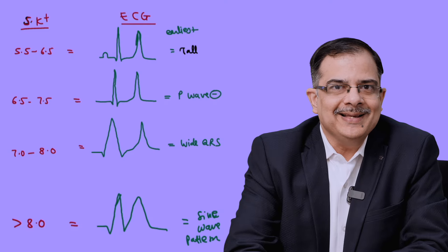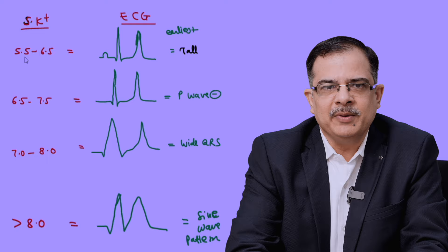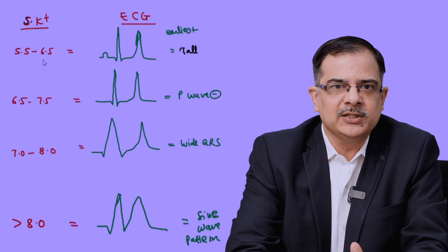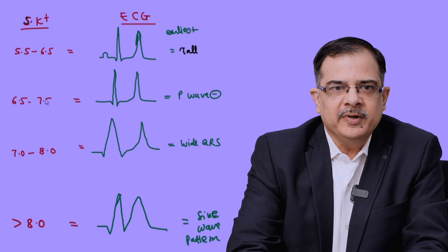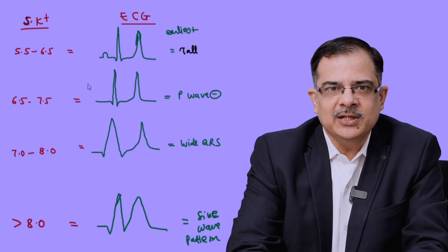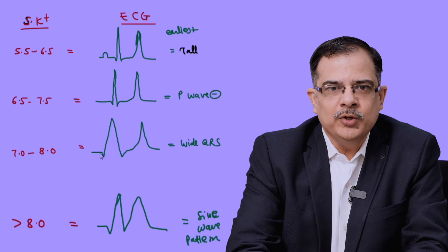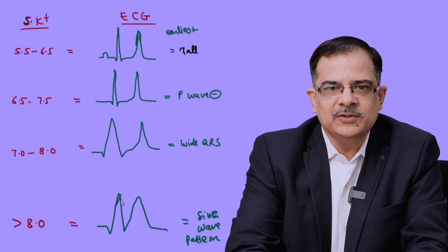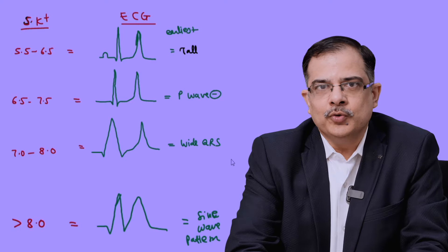Now coming to the treatment of hyperkalemia. The most important complication is cardiac. The ECG changes depend on the potassium value. When potassium is mildly elevated between 5.5 to 6.5, the earliest change is tall T waves. At 6.5 to 7.5, the P wave becomes very small or absent. At 7 to 8, there will be wide QRS complexes. Above 8, the ST segment becomes narrow and the QRS merges with the T wave, producing the sine wave pattern.